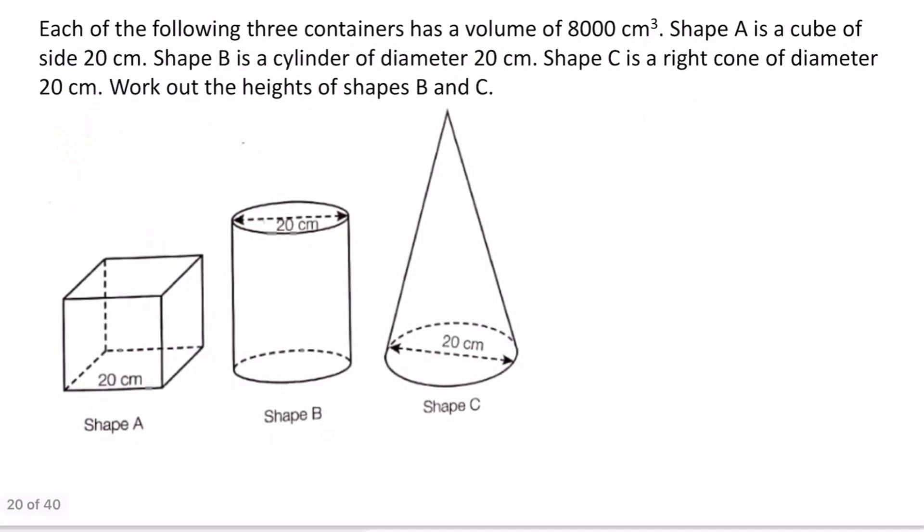Now for our final problem. Each of the following three containers has a volume of a thousand cubic centimeters. Shape A is a cube of side 20. Shape B is a cylinder of diameter 20 centimeters. Shape C is a right cone of diameter 20 centimeters. Work out the heights of shapes B and C. For both B and C, we know the diameter in centimeters so there are no conversions needed, and our job is to find their heights.